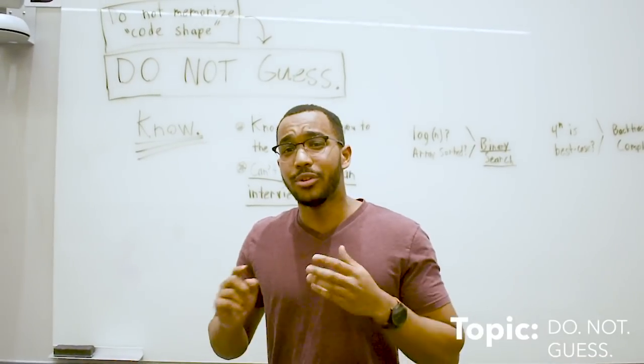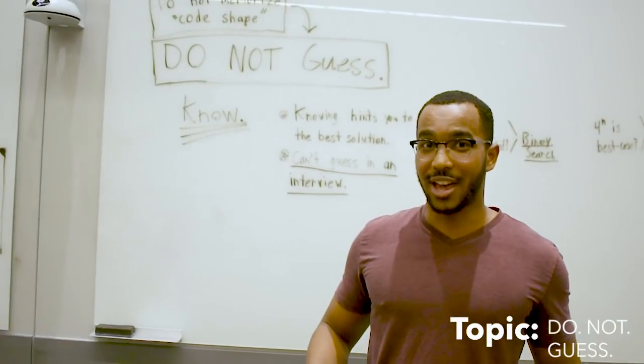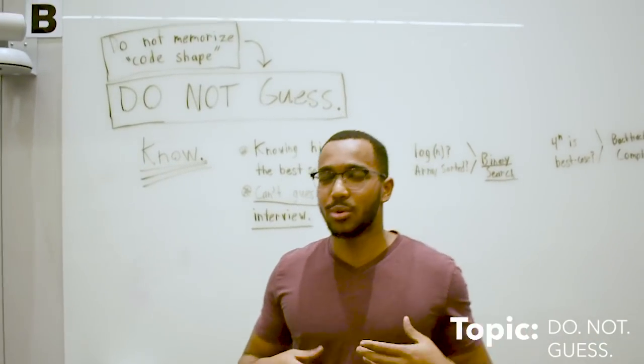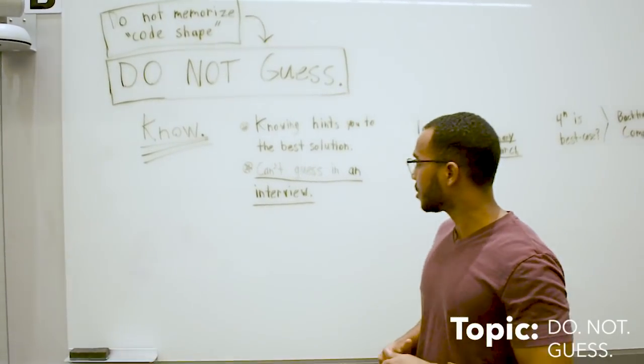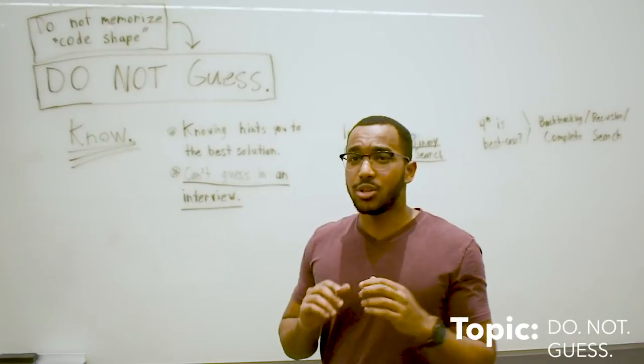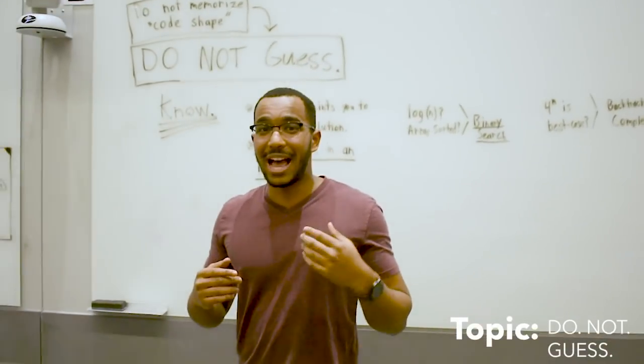Don't try to memorize the shape of code. Don't try to guess anything. You need to actually know what's going on. Because first off, if you know what's going on, it's going to lead you to the solution. If you know something best case is log n, then you know it's going to be something like binary search or having the search space.